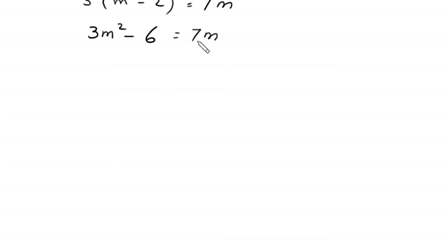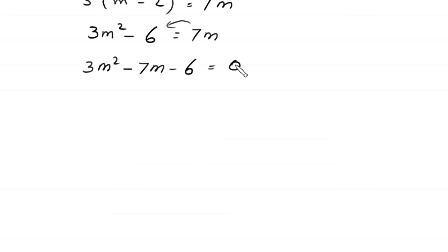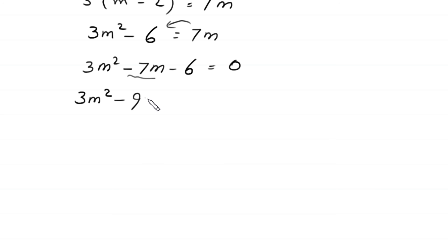Moving 7m to the left-hand side gives 3m² − 7m − 6 = 0. If this quadratic equation is factorable, we split the middle term: we write 3m² and split −7m as −9m + 2m, so 3m² − 9m + 2m − 6 = 0.